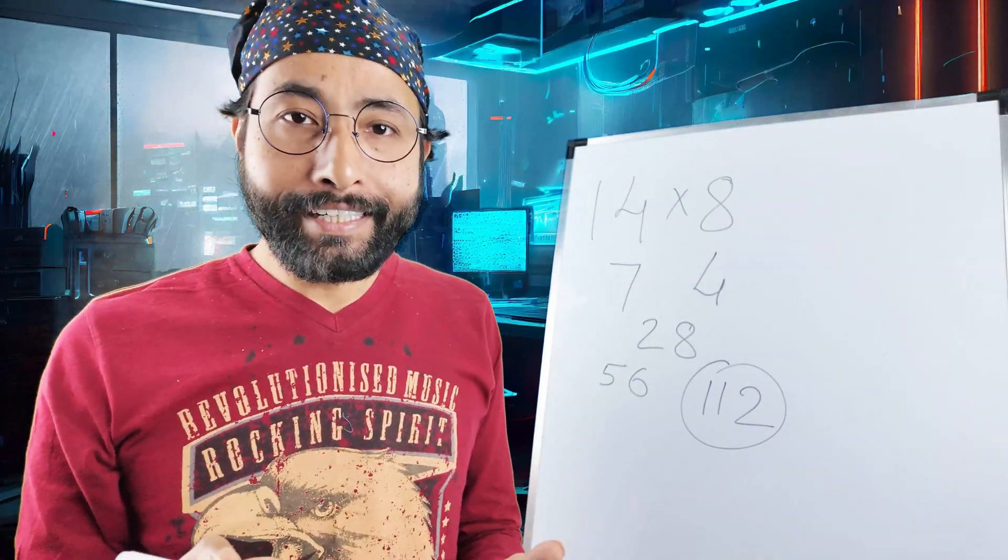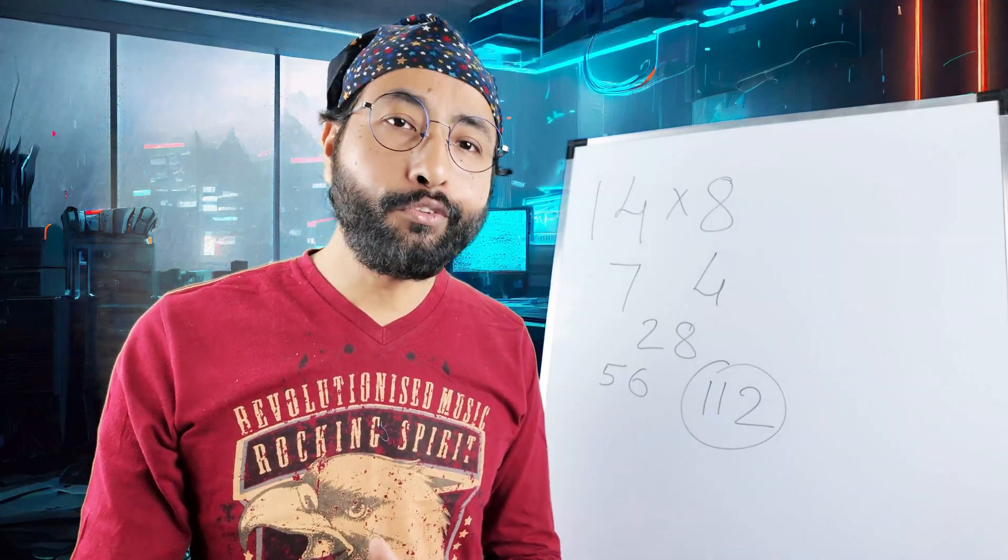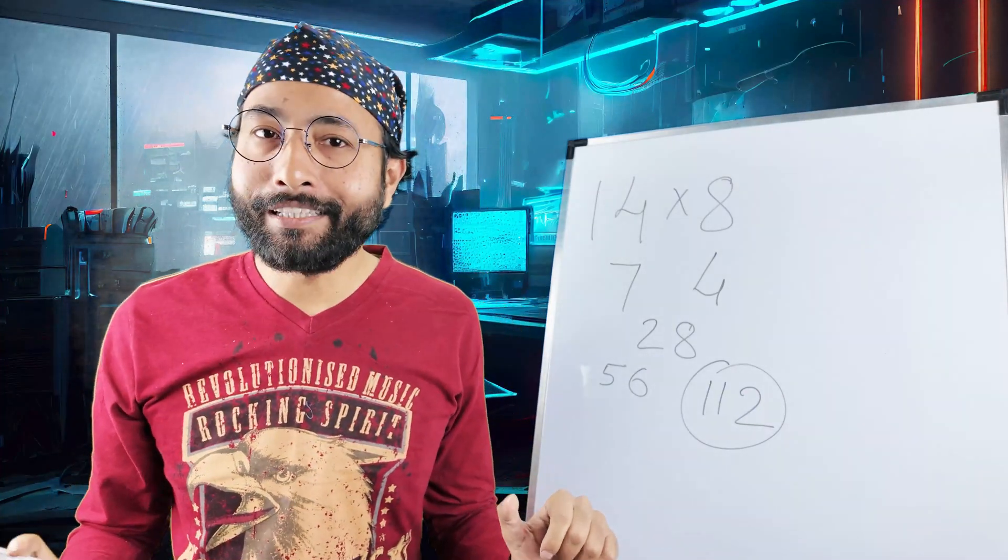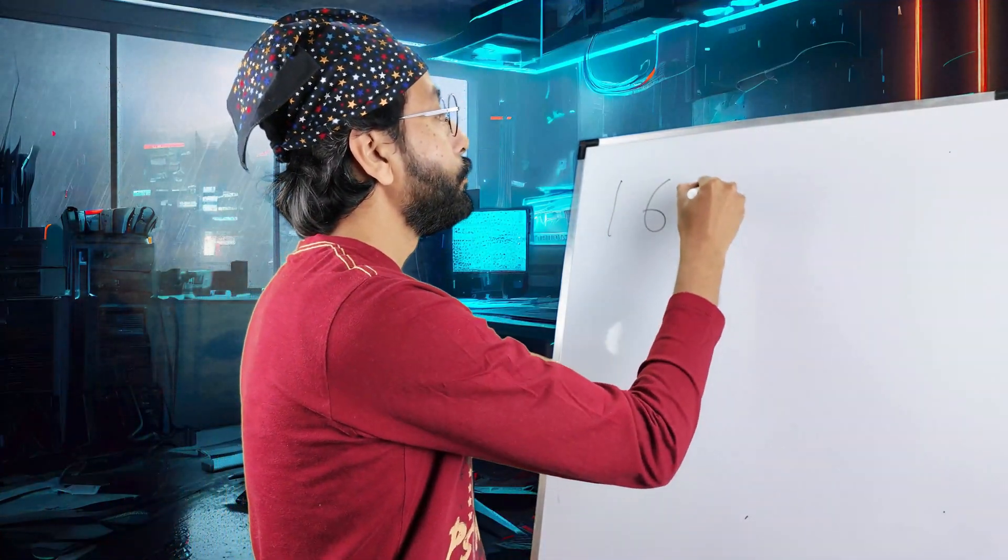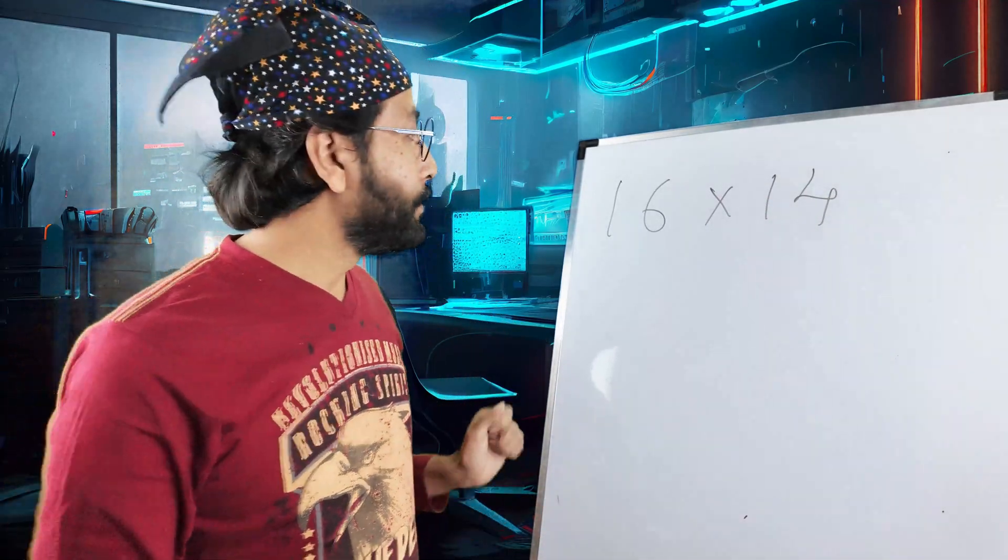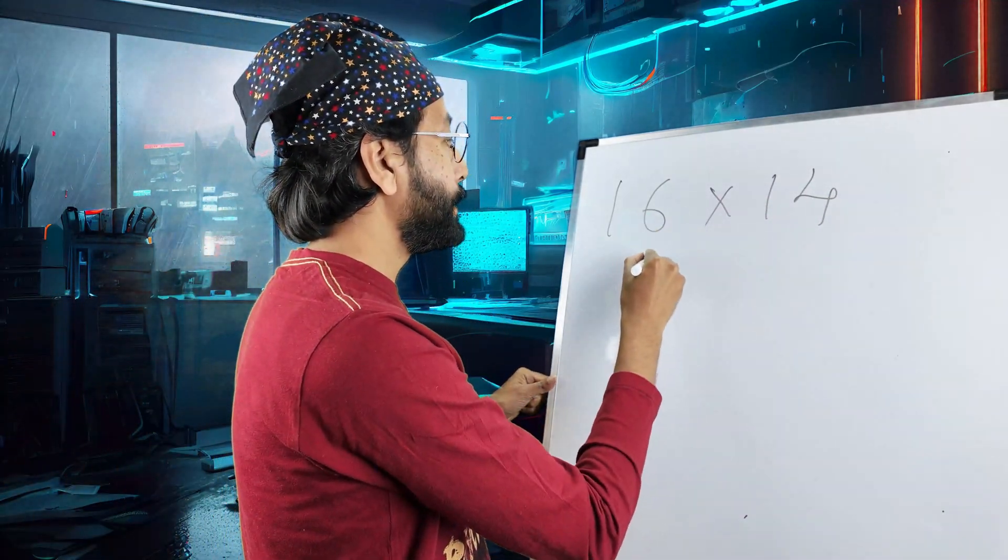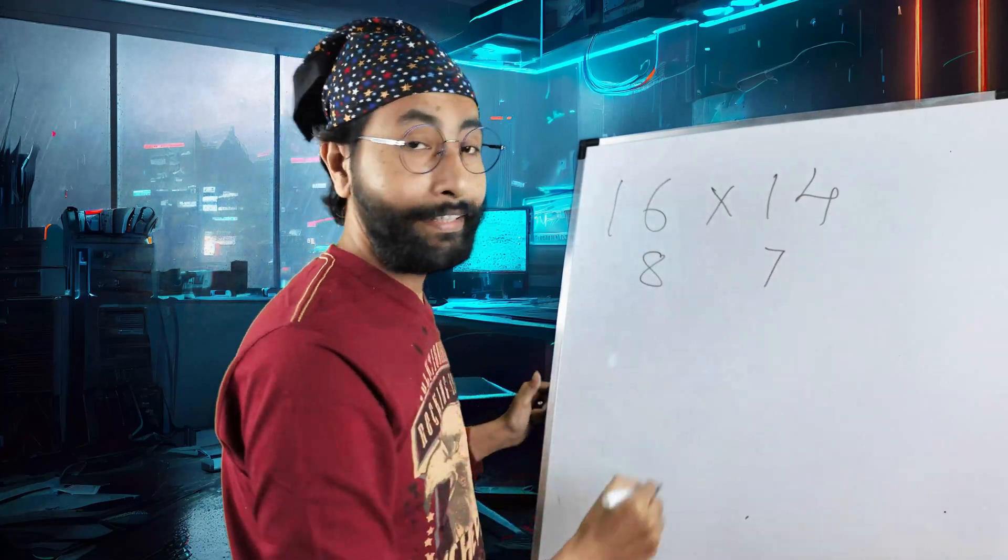Now this way, definitely we're going to solve all the tables. We don't have to. Today onwards, we don't have to remember any table. Now, what about 16 fourteens? Simple. Half of 16, 8. Half of 14, 7.